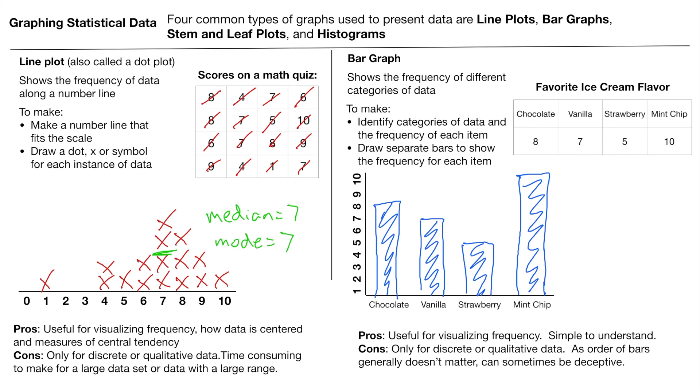We could figure out the mean by adding all these values together, divide by 16. So we can figure those out. Now, some cons. This is really only for discrete or qualitative data categories. You can't really do it for if you have a range or small decimals or a whole bunch of numbers. It's kind of tedious. Time consuming to make for a large set of data or with a very large range.